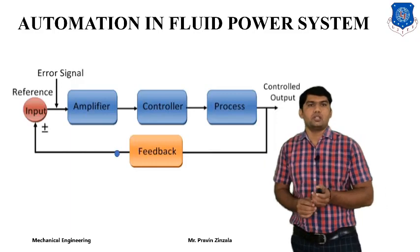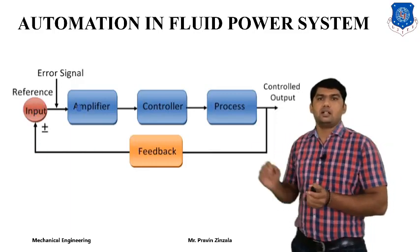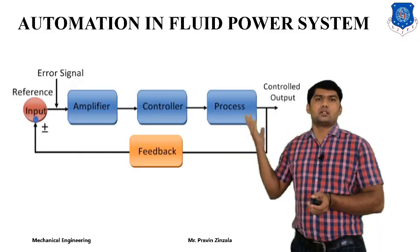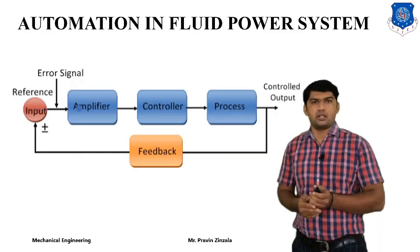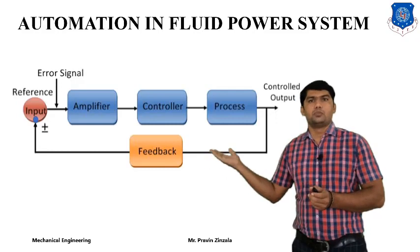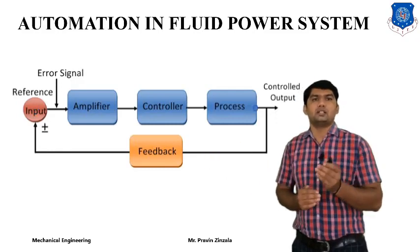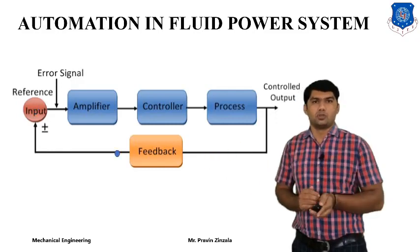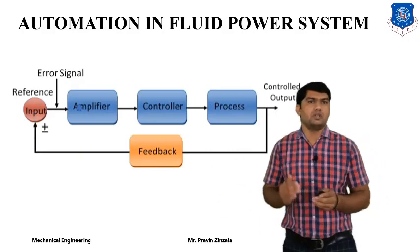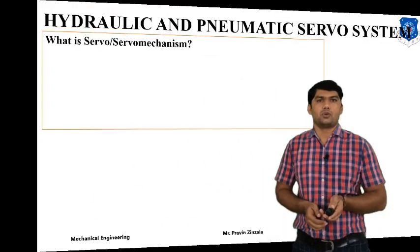Automation in the fluid power system utilizes many components: amplifier, comparator, feedback system, controller, different types of actuators, different types of signals, and an input comparator which compares the input and output signals. By utilizing automation, we can improve the quality of any product.